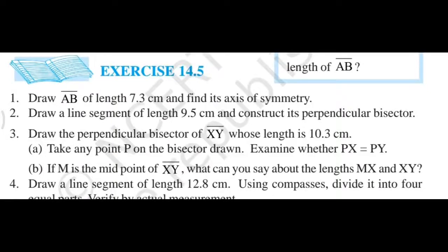Now, this is exercise 14.5. Question number 1. Draw AB of length 7.3 cm and find its axis of symmetry.